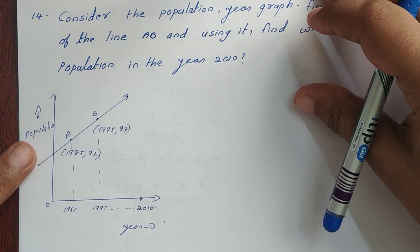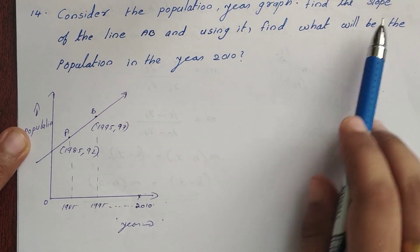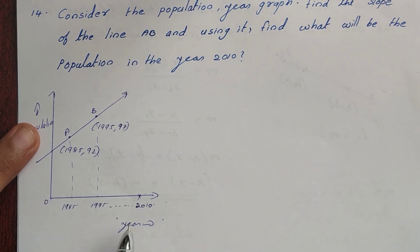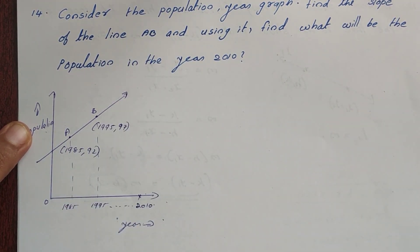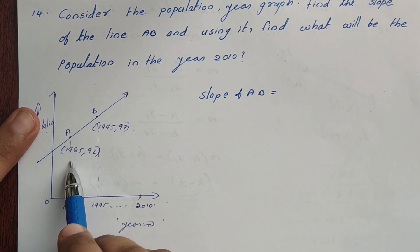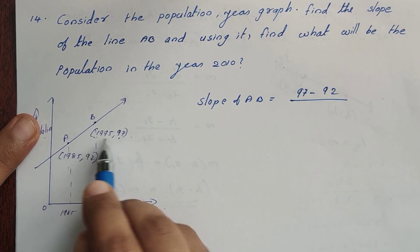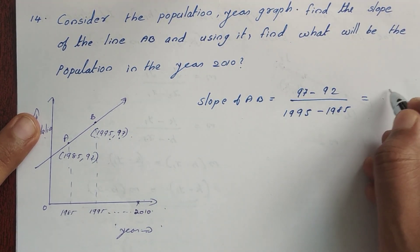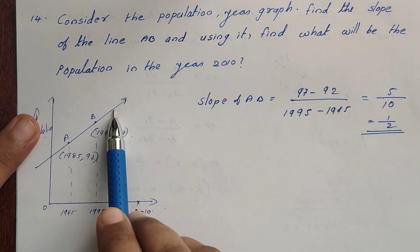The last problem — Problem 10: Consider the population-year graph. Find the slope of the line AB and use it to find the population in year 2010. The slope of AB equals y2 minus y1 divided by x2 minus x1. With coordinates giving 97 minus 92 divided by 1995 minus 1985, that is 5 divided by 10, equals 1 by 2.